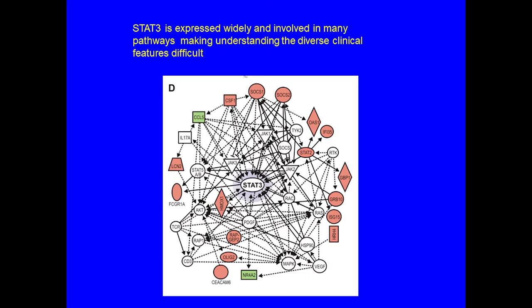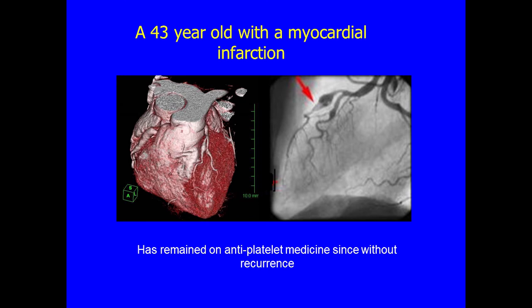STAT3 is involved in so many different pathways that it's very confusing why so many different parts of the body are involved. Especially when thinking about bone disease, joints, and teeth, it's been very hard to figure out exactly what's going on. Around 2005, we recognized the aneurysm finding, which has helped us think more about some of the other parts of this disease.